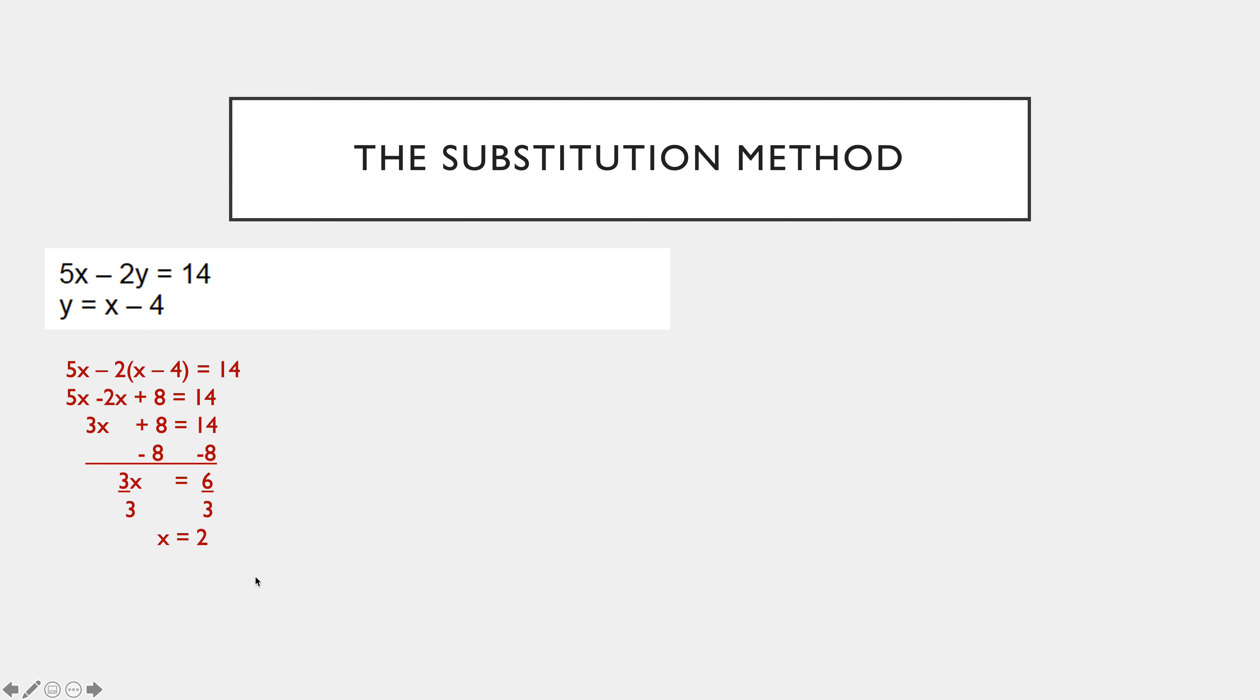So I have my x value. How do I get my y value? Well, you can plug it in either original equation, but what's really cool about substitution is it's usually super simple to find the missing variable. Just use the equation that says the other one equals. In this case, y equals x minus 4. Substitute the 2, so we're kind of doing substitution all along there. When we substitute the 2 in, y equals negative 2.